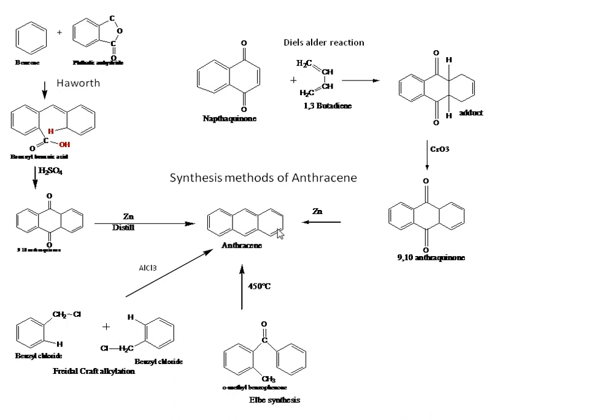To summarize the synthesis methods of anthracene: first is Haworth synthesis using benzene and phthalic anhydride to produce benzoylbenzoic acid, then 9,10-anthraquinone, then anthracene; second is Friedel-Crafts alkylation using benzoyl chloride with aluminum chloride; third is Elbs synthesis using ortho-methylbenzophenone heated at 450°C; fourth is the Diels-Alder route using naphthacenone and 1,3-butadiene, oxidation to 9,10-anthraquinone, and reduction to anthracene.